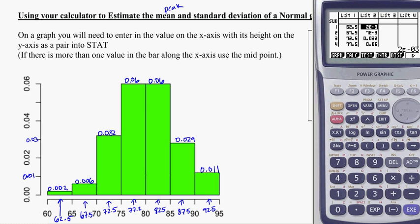So I entered in all those points for each one. For instance, 67.5 and 0.006, all the way down to the last one, which was 92.5 and 0.011. Entered in as pairs there. And you might remember doing that from STAT earlier in the year.